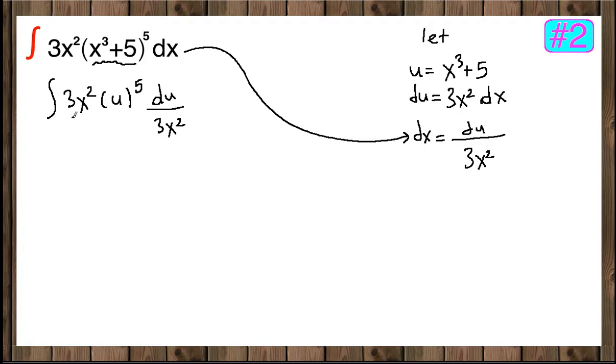And here, 3x squareds cancel out. Now, what is left is u to the 5th.